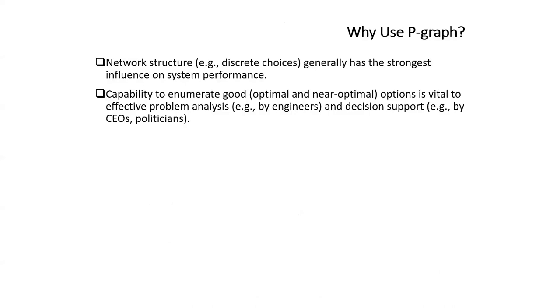Now I go to my conclusions. P-graph is important because number one, network structure and discrete choices across network structure typically has a stronger influence on system performance as compared to variations of performance within a given network structure. Thus, the capability to enumerate these networks is very important in many problems. This enumeration capability is important for problem analysis by engineers and analysts and also important for decision support because typically the analysts would not be the final decision makers, but they would need to convince their superiors, for example, CEOs of corporations or politicians who make policies for entire cities or countries. The arguments can be made much more persuasive by showing that different alternatives have been explored to the fullest extent.